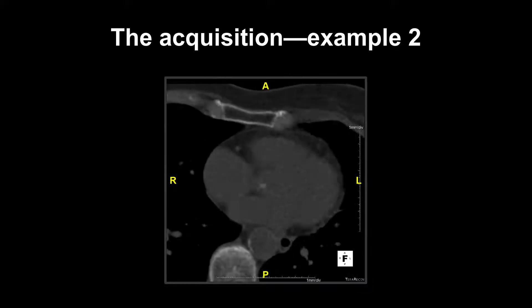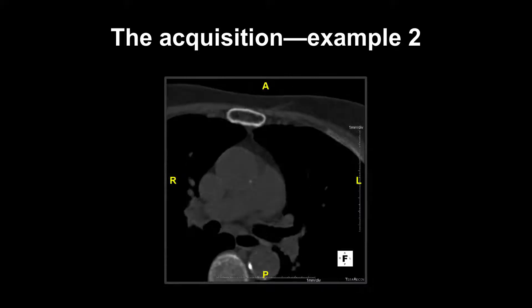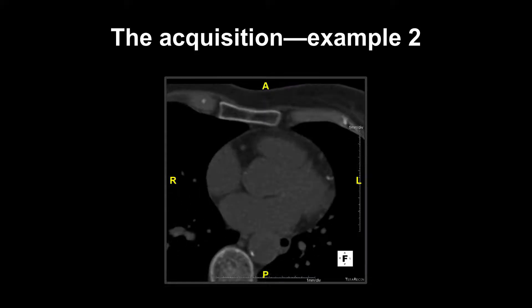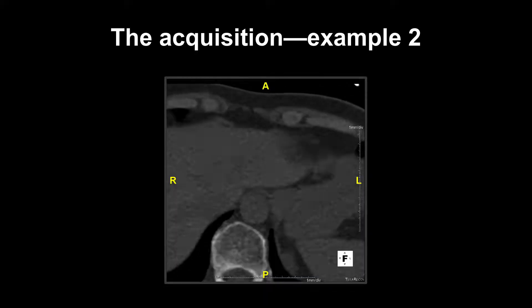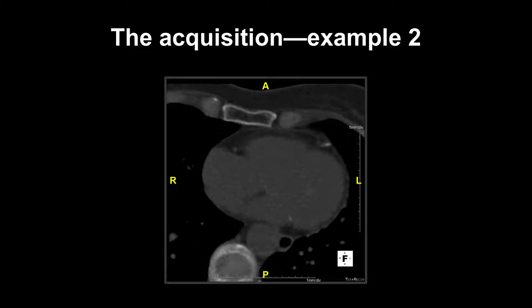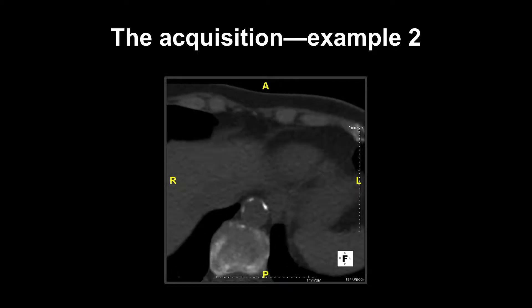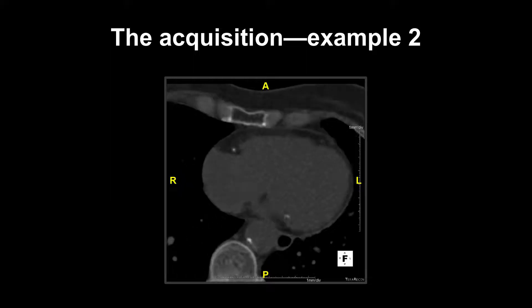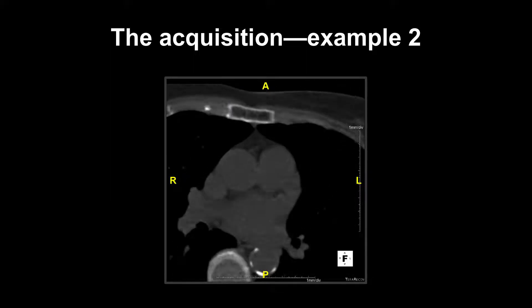This is an example of a patient who has calcification present in all three of their coronary arteries. There is calcification present in the left main stem, proximal and mid LAD segments, the first diagonal branch, the left circumflex, and the mid-right coronary artery. You can also see calcification in the aortic valve and the descending aorta.